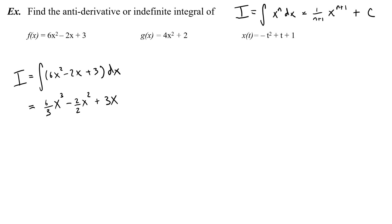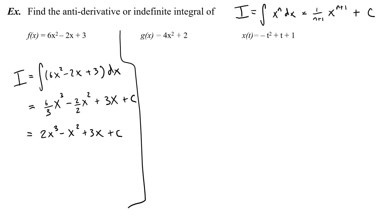The antiderivative of 3 is 3x, which makes sense because the derivative of 3x is 3. Maybe there was some constant, so I have to write plus c. And I might want to simplify this: 6 over 3 is just 2, so 2x cubed, and 2 over 2 is just 1, so x squared plus 3x plus c. Congratulations — I took the integral.